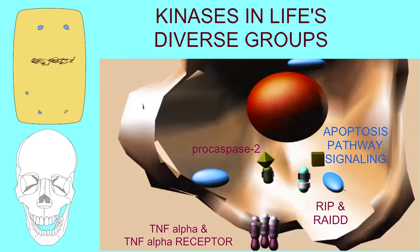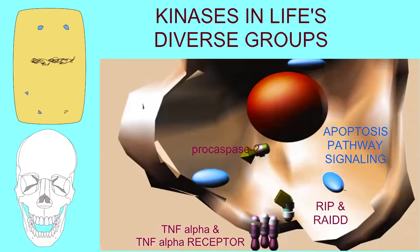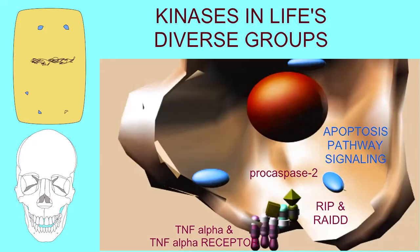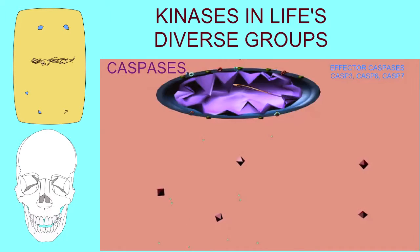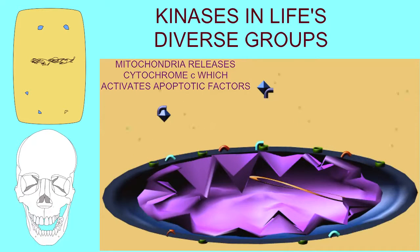In humans, abnormal cell growth can be controlled by programmed cell death or apoptosis, which involves a number of enzymes such as caspases, the release of materials from the mitochondria, and a number of other components.